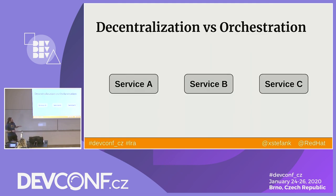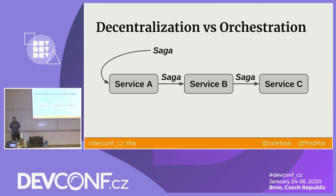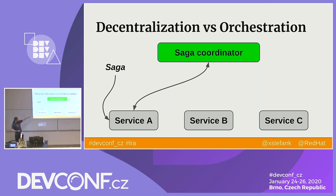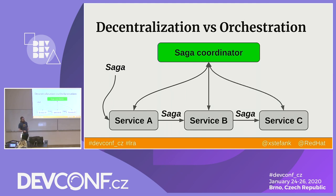There are two different approaches you can take when developing sagas: choreography and orchestration. Choreography is what I was showing so far — passing the saga definition through different services. Orchestration uses a saga coordinator that is responsible for calling individual operations and compensations on your services. Every service needs to enlist with the coordinator, which is responsible for making the compensation decision.